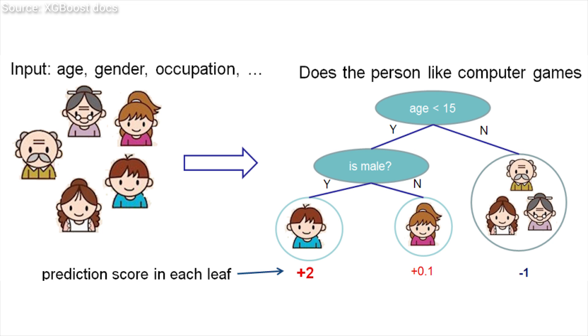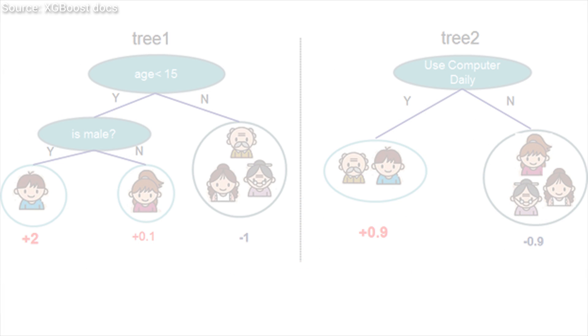But this tree was just one possible way of approaching the problem, and admittedly, not a spectacular one. A different decision tree could be simply asking whether this person uses a computer daily or not.